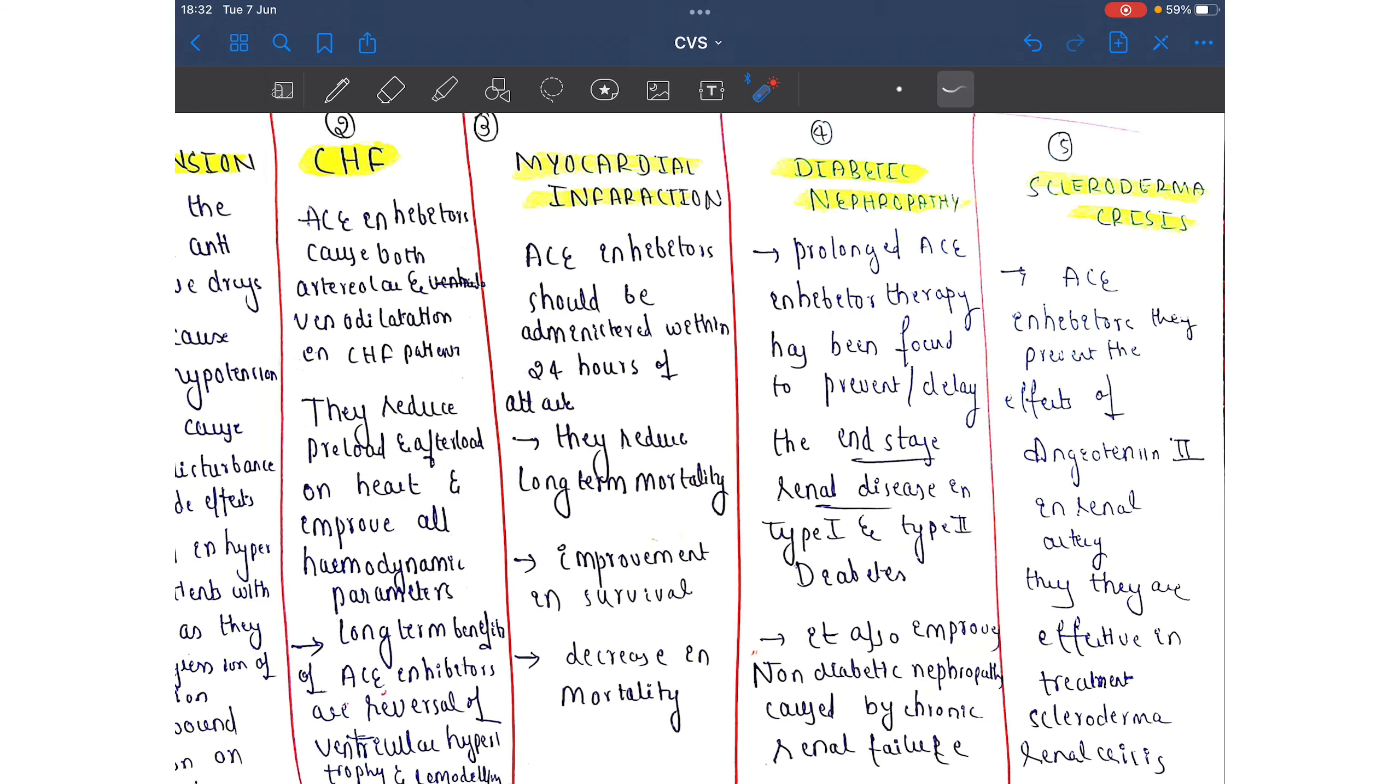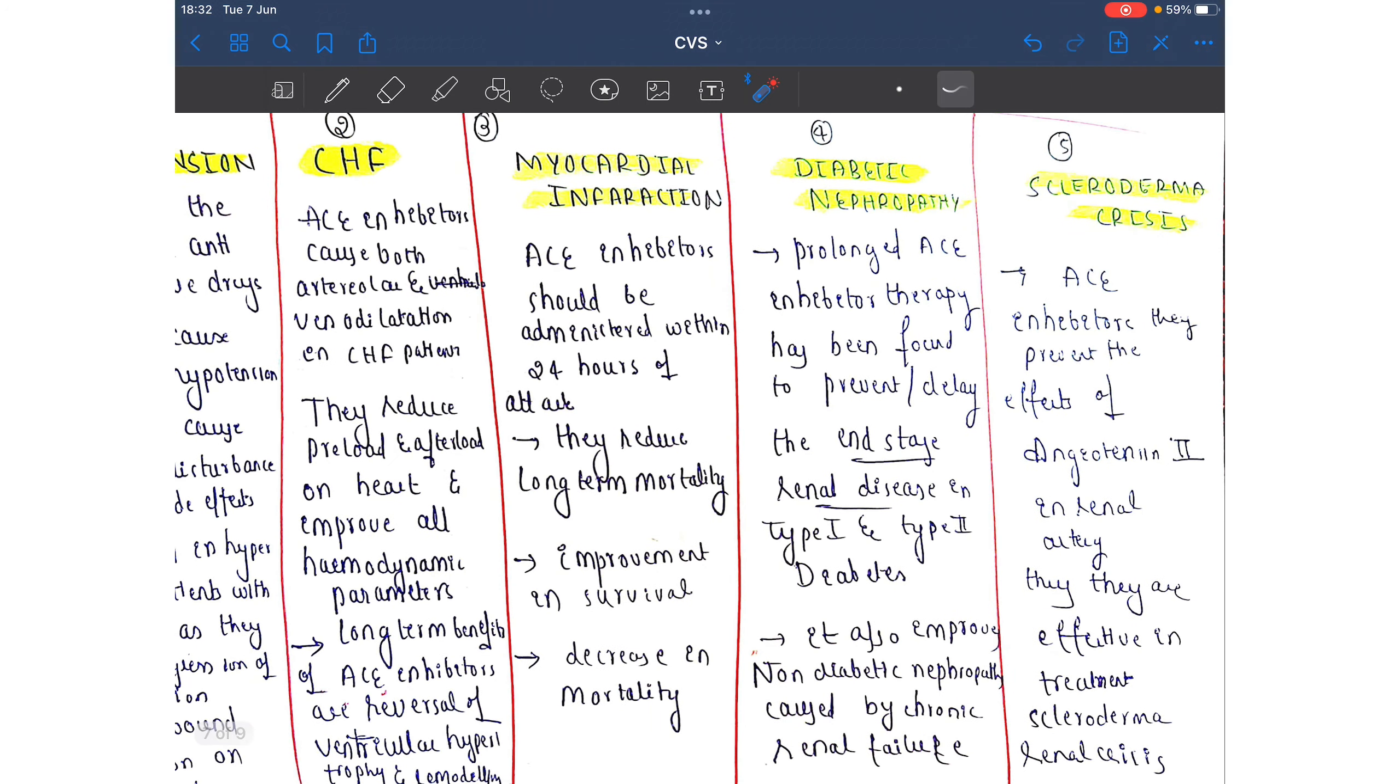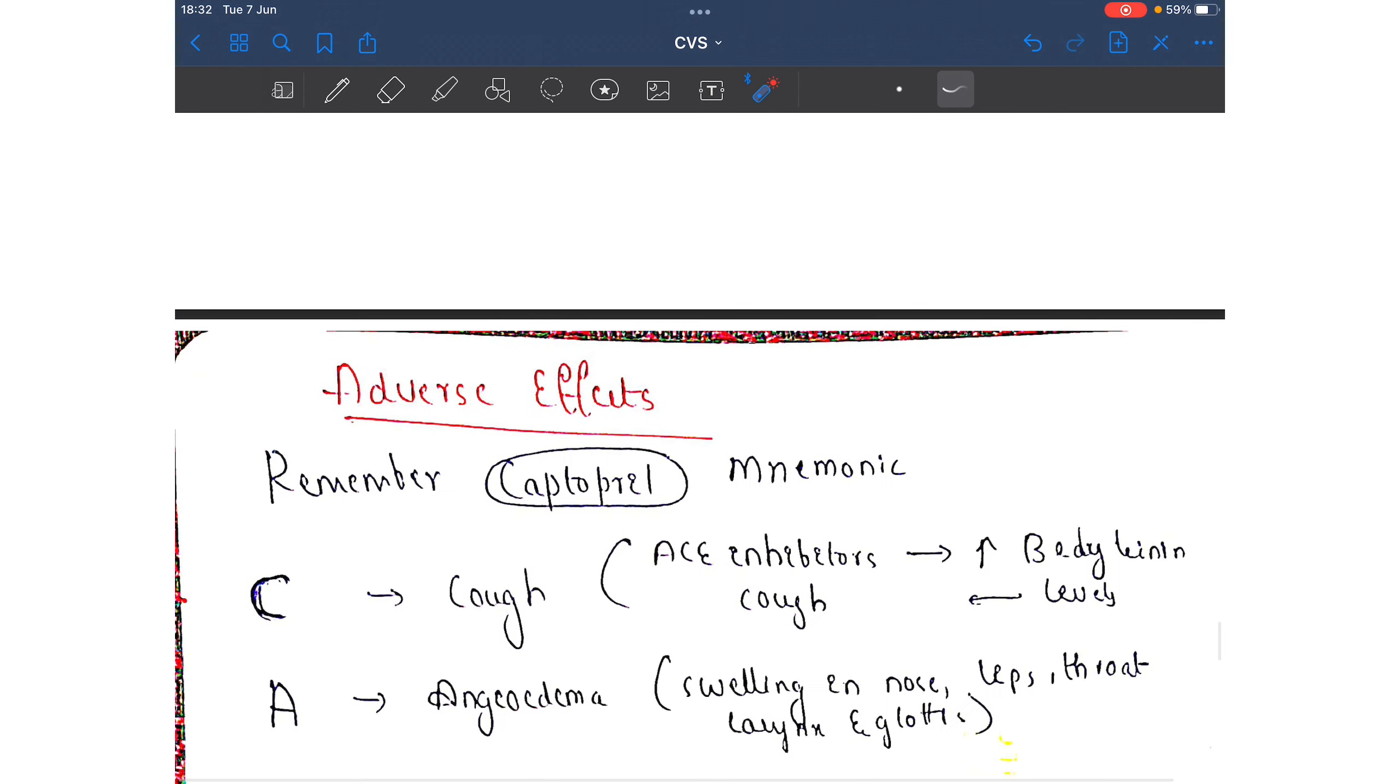They are also used in diabetic nephropathy because prolonged ACE inhibitor therapy has been found to prevent end-stage renal disease in case of type 1 and type 2 diabetes mellitus. In case of scleroderma crisis also, these ACE inhibitors are used.